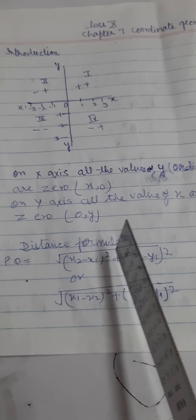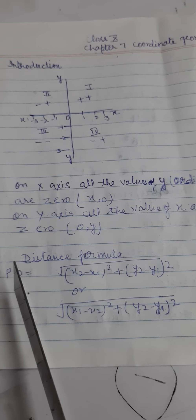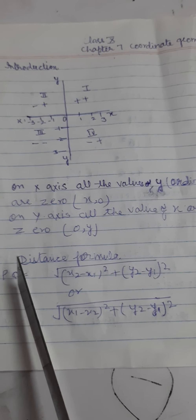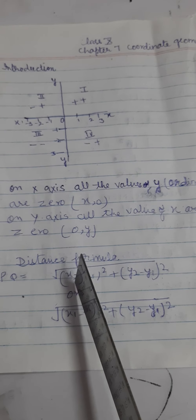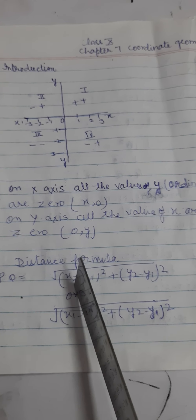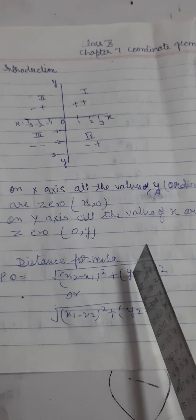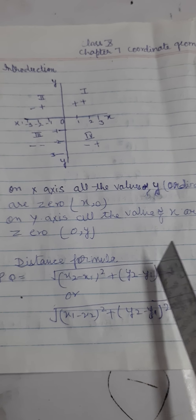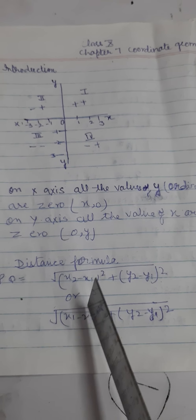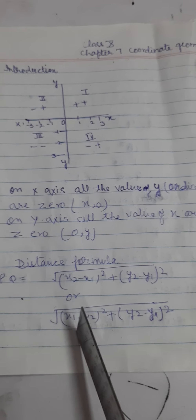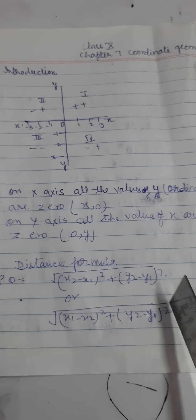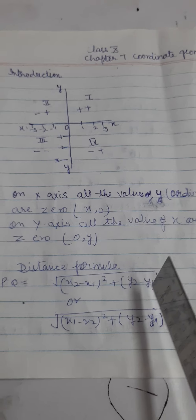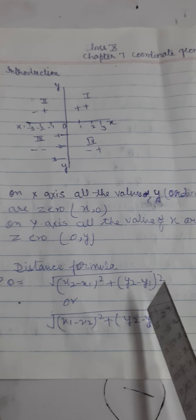Now we are going to use the distance formula. For two points P and Q, the distance PQ can be found by the formula: √[(x2 − x1)² + (y2 − y1)²], which is the same as √[(x1 − x2)² + (y1 − y2)²]. In both cases the answer will remain the same.